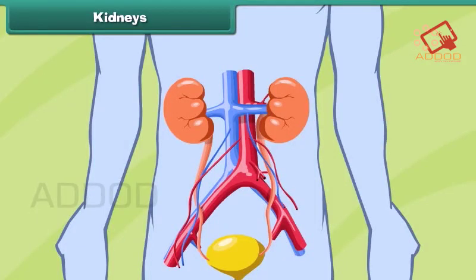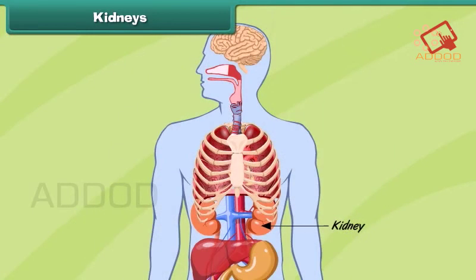Kidneys: the kidneys are organs that keep our blood free from unwanted substances called wastes. Our body has a pair of kidneys located just below the ribcage, one on either side of the body. The kidneys remove wastes from the blood and various body parts and thus keep us healthy.